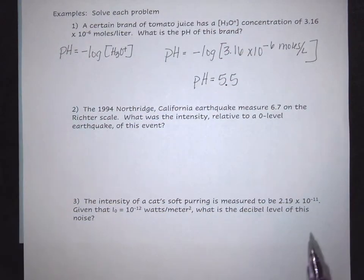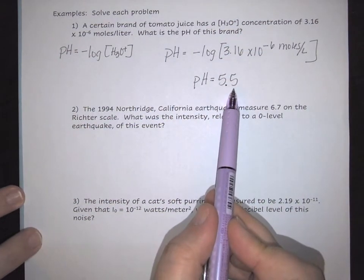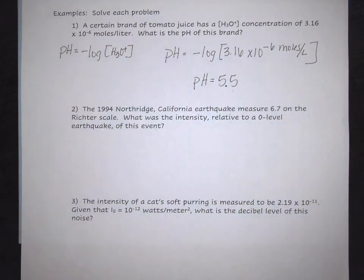When dealing with pH, it is generally always rounded to the nearest tenth. When you're looking at the decimal answer in your calculator, keep in mind that you want to round to the nearest tenth, unless told otherwise.